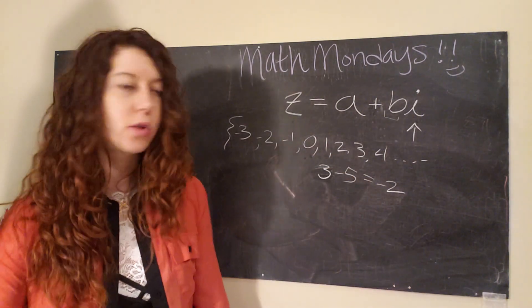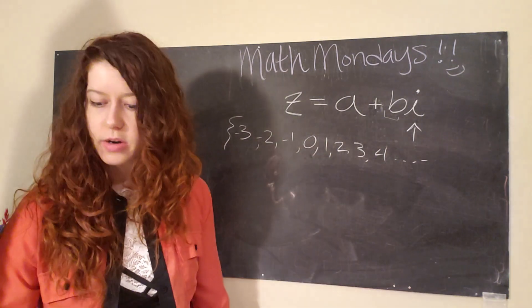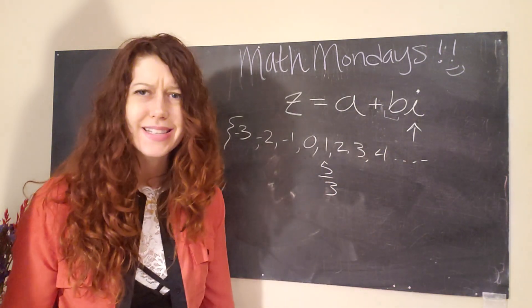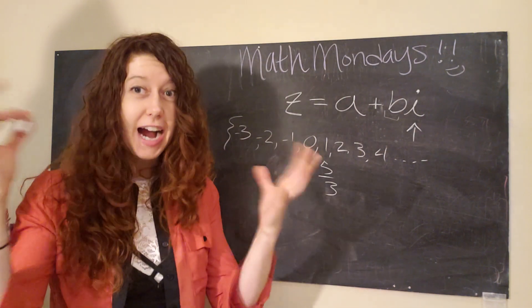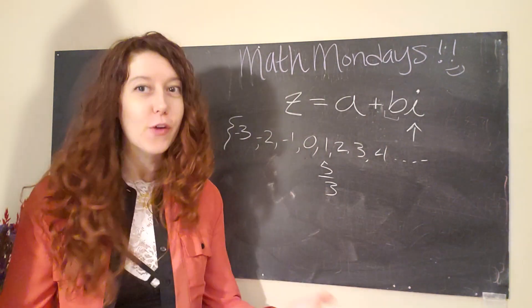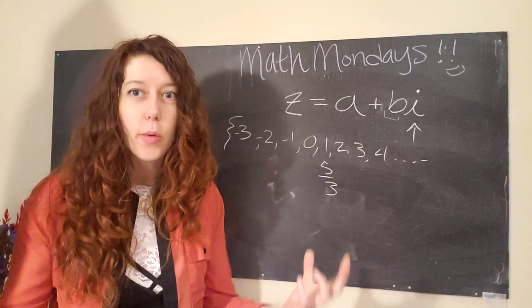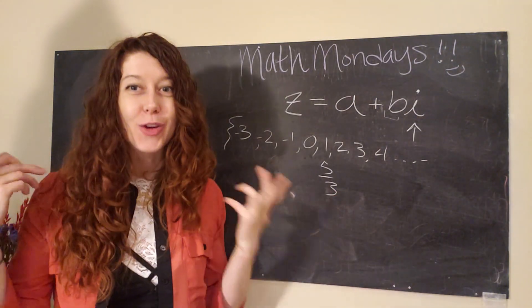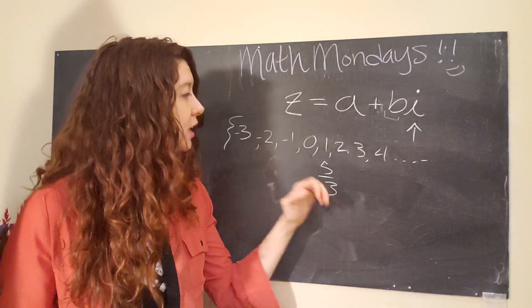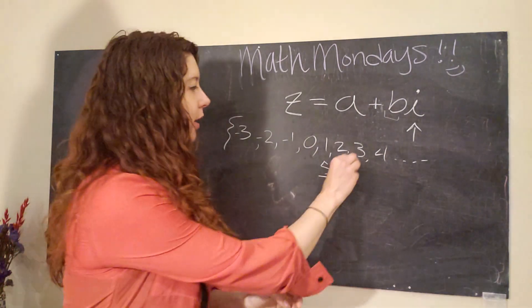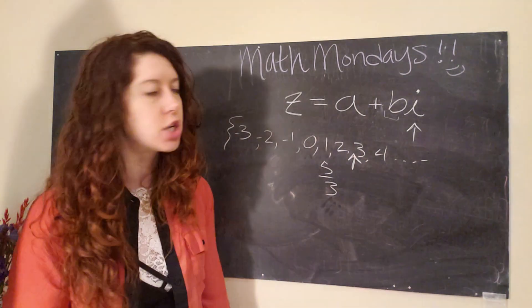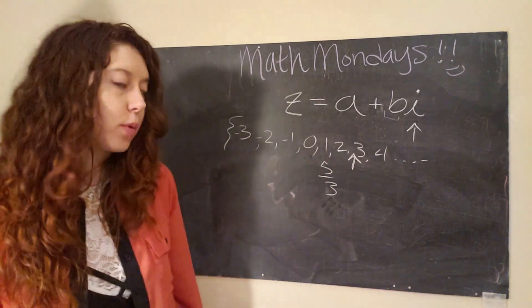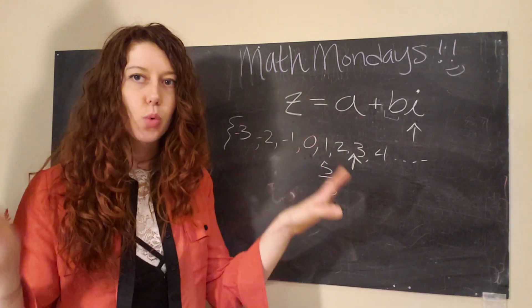But then someone was like, wait a second. What if I want to divide five by three? That's not an integer. Folks freaked out. Oh my gosh, what do we do? And then some smart people were like, it's okay, we're just going to add another way of counting. So we're going to include numbers that are in between these integers: fractions or rational numbers as they're sometimes called in the math world.